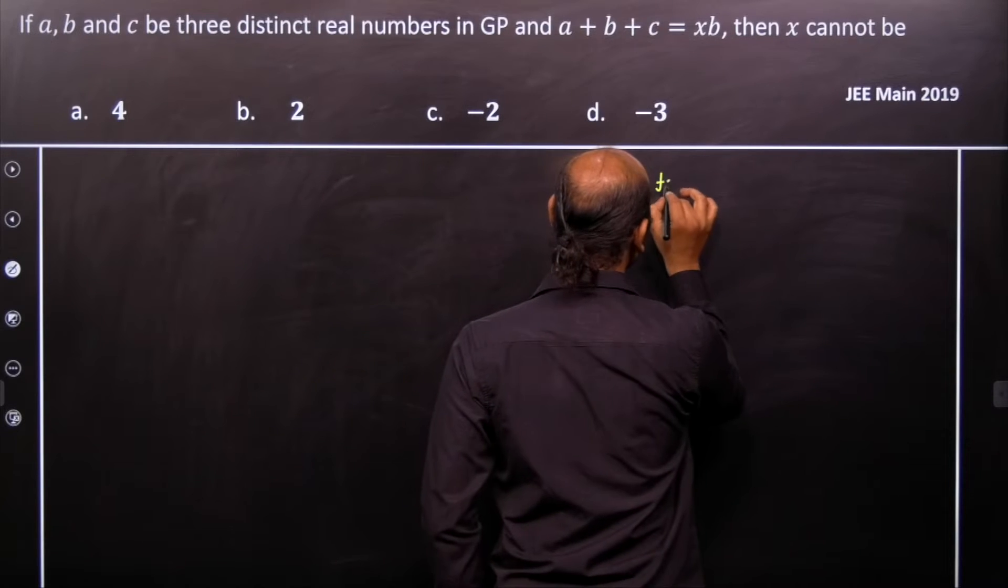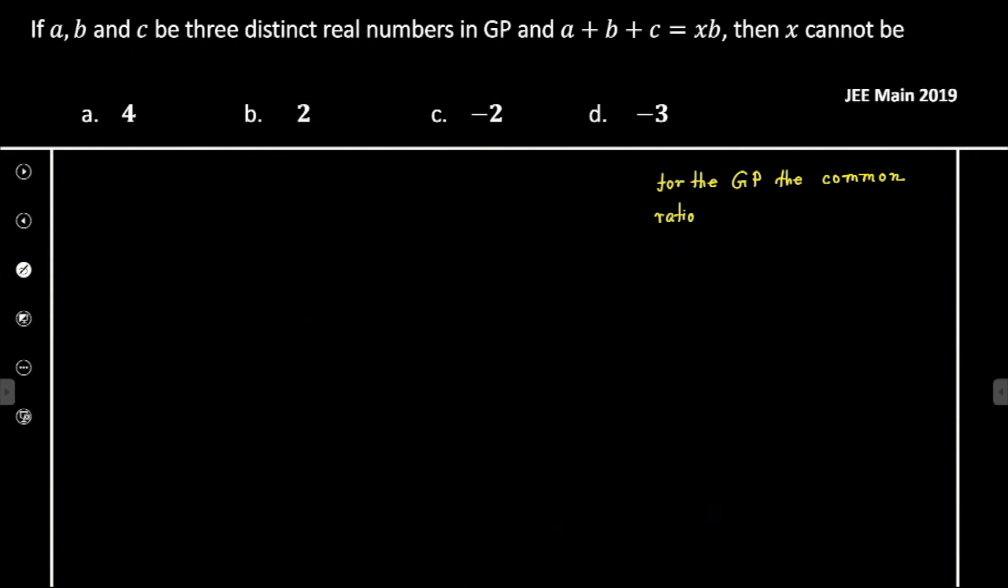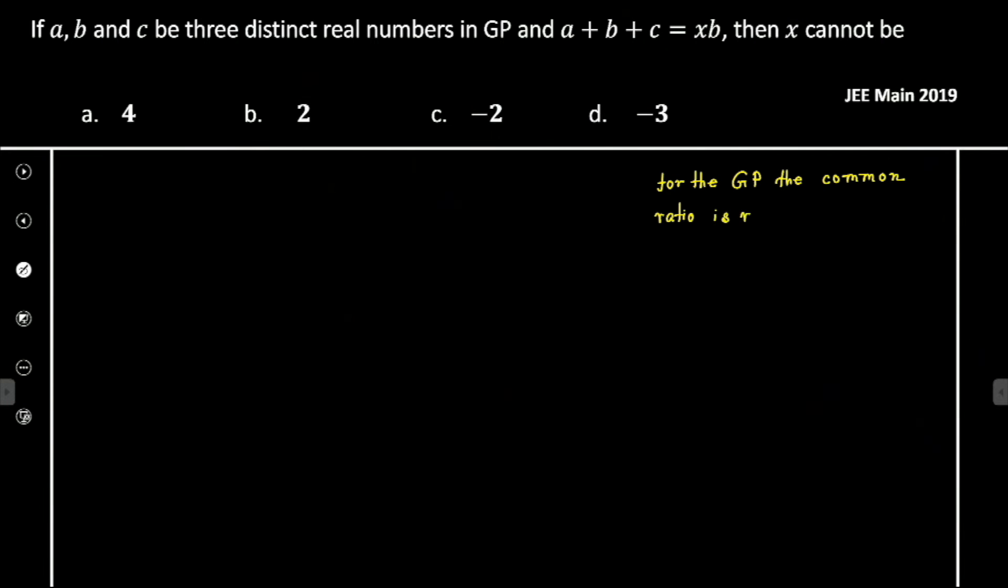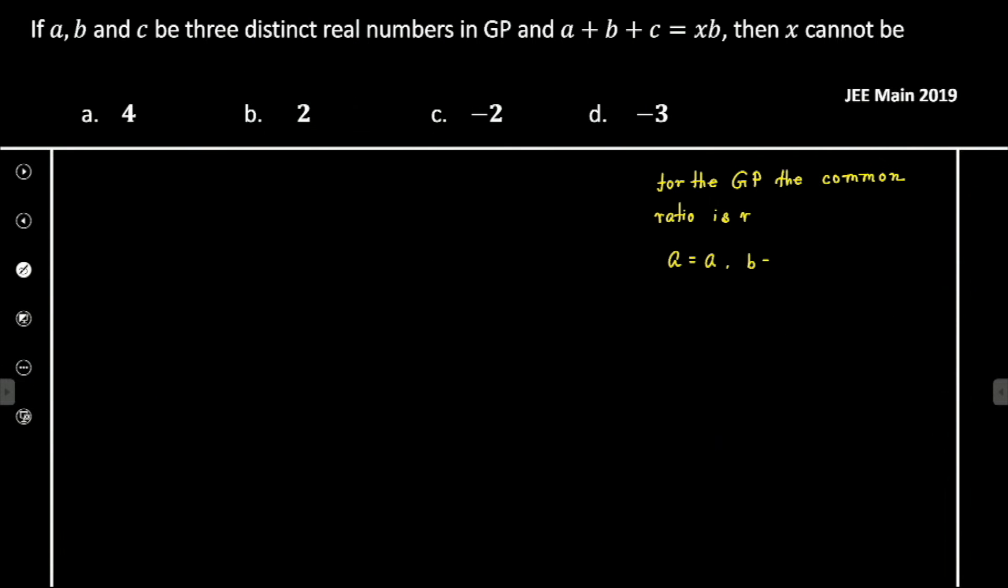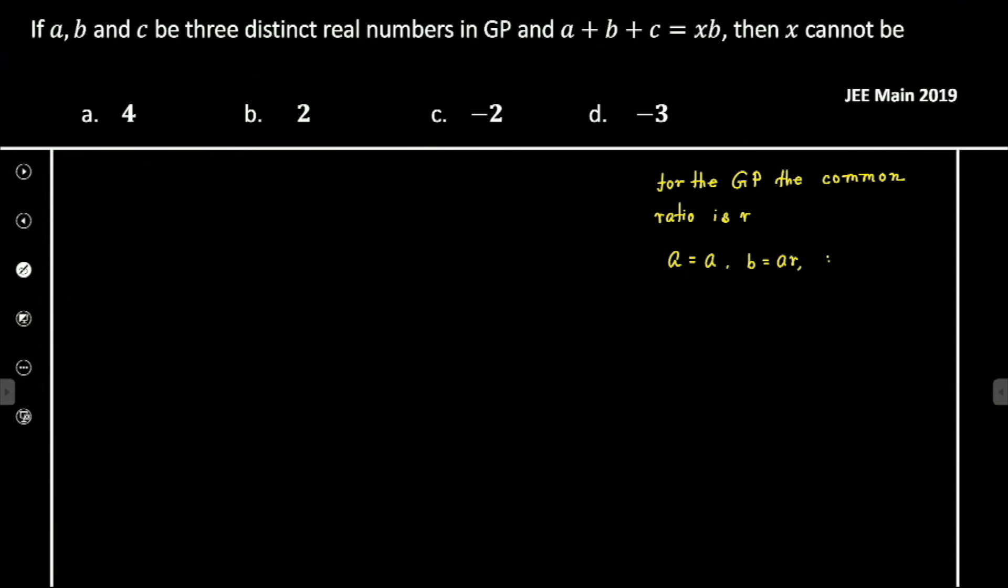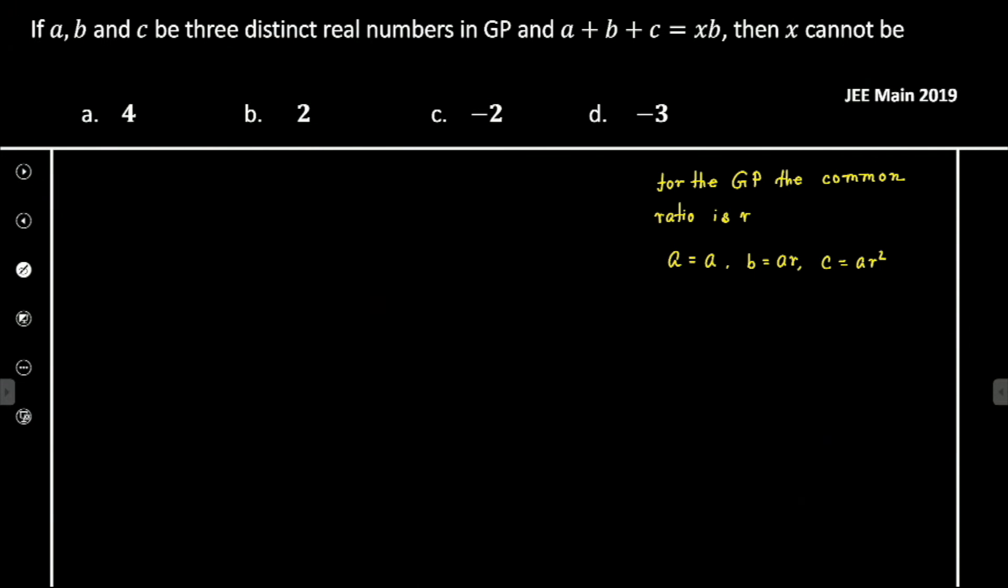So for the GP, the common ratio is r. Therefore, we can consider a = a, b = ar, and c = ar². Now, what is the given equation?